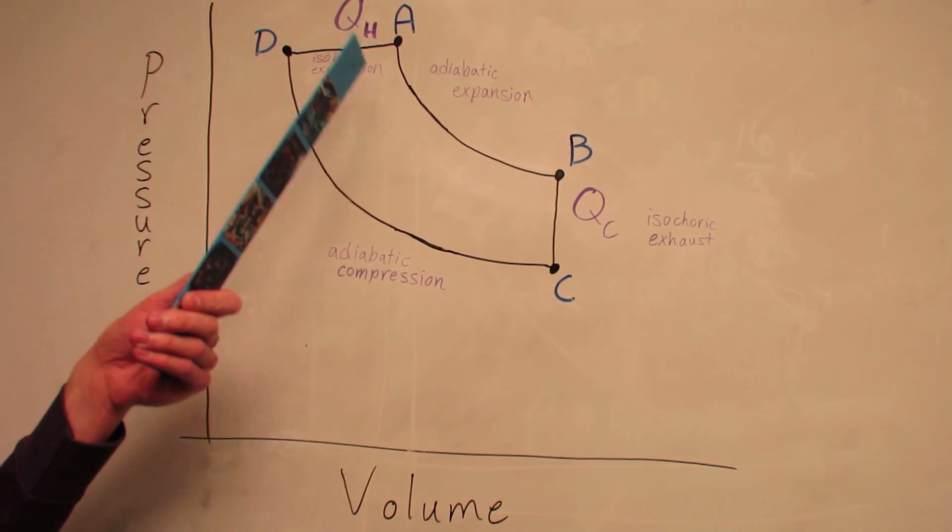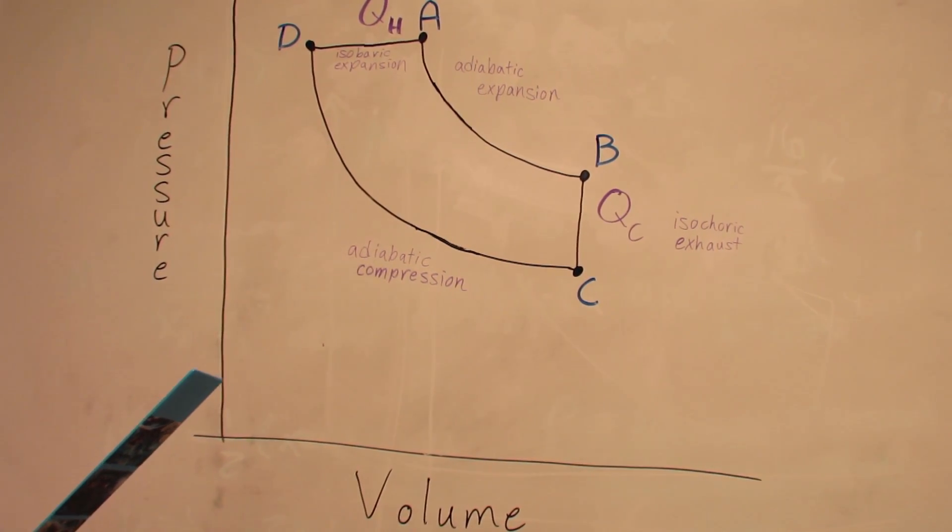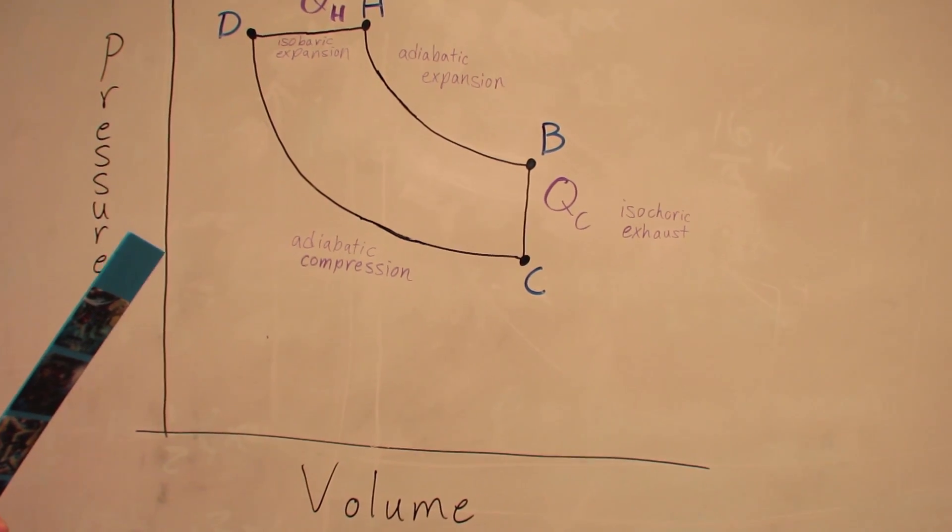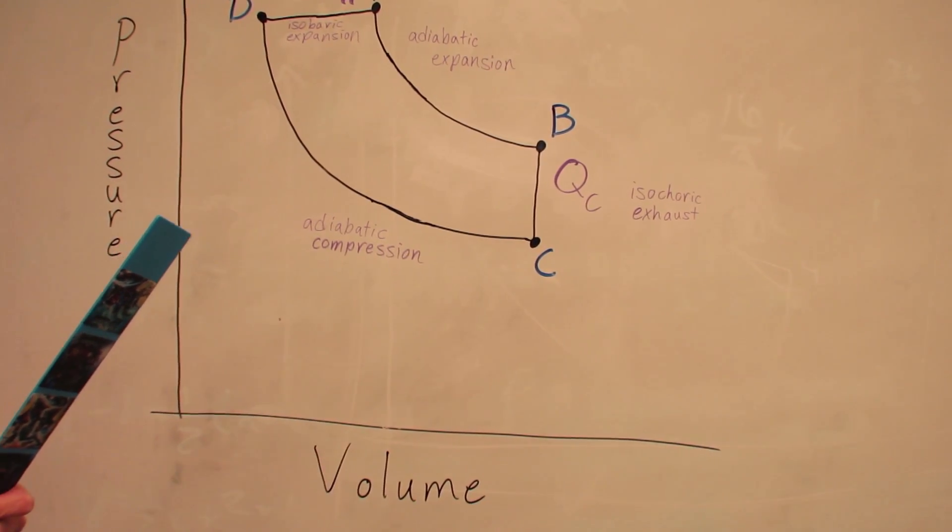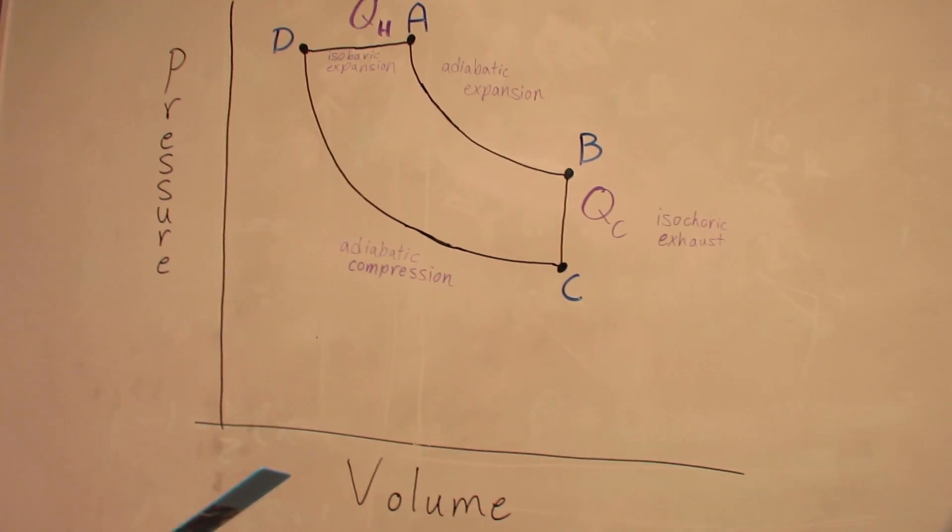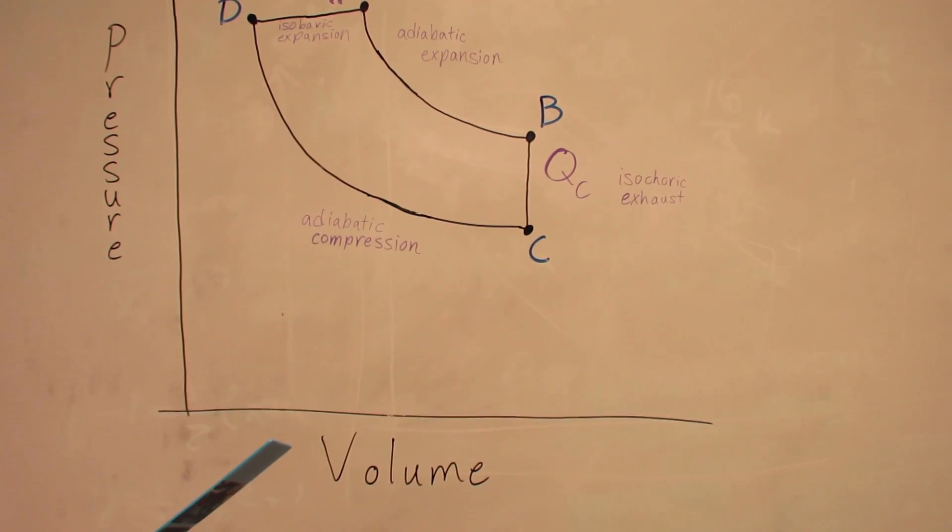Next, from A to B, we have adiabatic expansion. And in those two stages, from D to A and from A to B, the system produces work. Then in our final stage, from B to C, we reject heat to the surroundings, QC, which is our cold reservoir, via the exhaust.